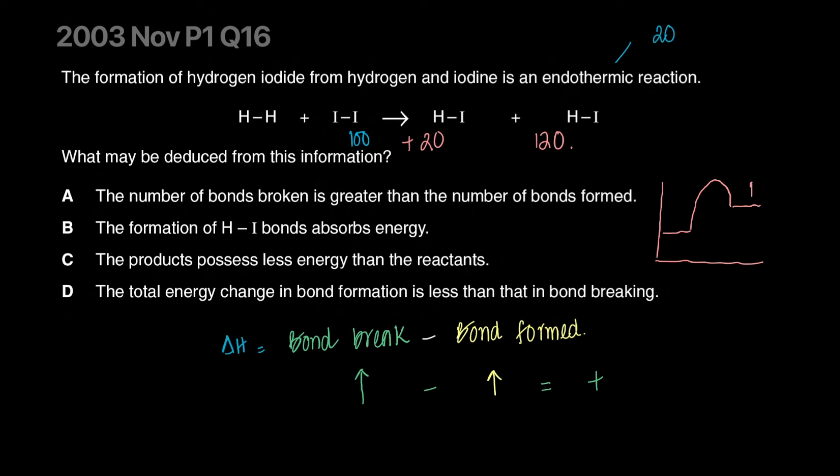Think more like an energy profile. It's endothermic, so the product side is higher than the reactant side. This is actually higher up from this side. This is at a lower energy, relatively. This is at a higher energy. Total energy change in bond formation is less than that of bond breaking. Yes, that's why it's endothermic. The correct answer is D.